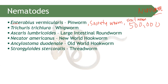Trichuris trichiura is the nematode that dances — the whipworm. As I show you how Trichuris trichiura looks, you will figure out why I call it the dancing nematode. It's a way to remember that Trichuris trichiura is the whipworm.